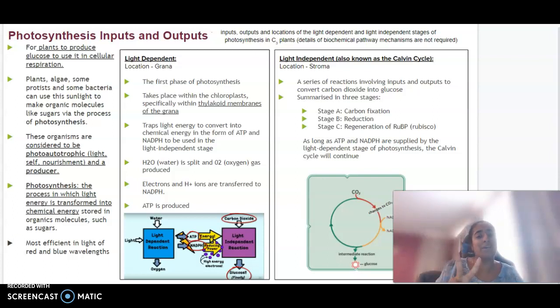There are two major stages that occur: the light dependent and the light independent stage. The light independent stage can also be referred to as the Calvin cycle.